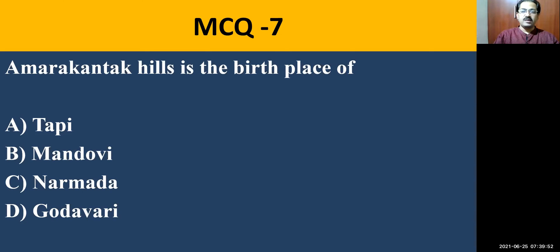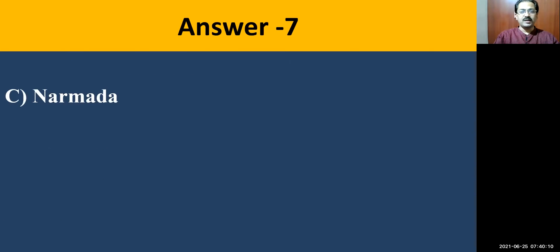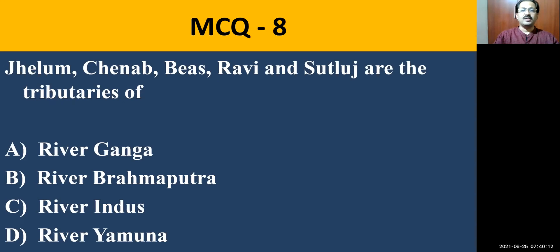MCQ question number seven: Amarakantak hills is the birthplace of — River Tapi, Mondovi, Narmada, or Godavari. The correct answer is Narmada. Narmada takes its birth at Amarakantak.